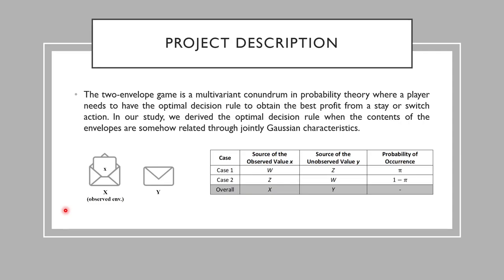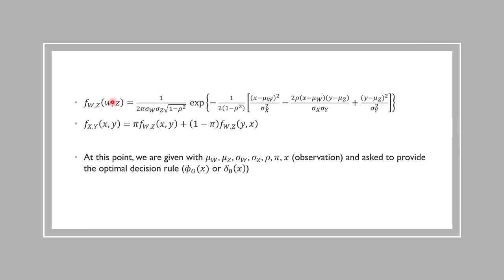Here it is given that omega and z are jointly Gaussian and as the player you are equipped with the knowledge of the joint pdf of omega and z. However, the envelopes are indistinguishable. Hence, you don't know which envelope contains the sample of which random variable. Now, I provide you these two closed envelopes and ask you to pick one of them.